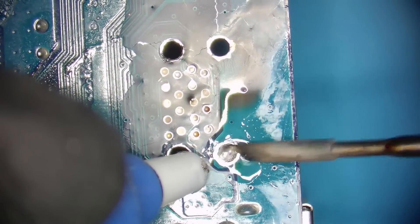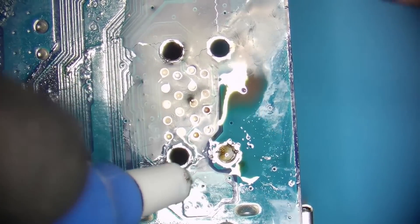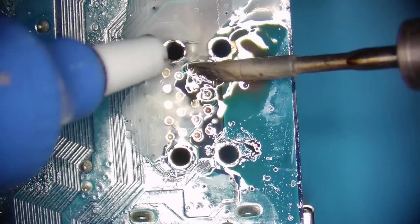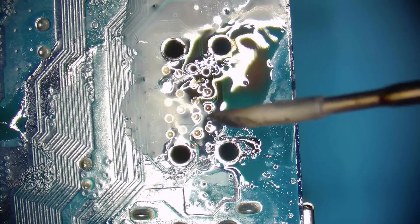First, you make sure that the solder joint you're trying to suck the tin out of is fully molten. Then you bring the nozzle of the pump closer and press the button on the pump and it sucks out the majority of the tin.